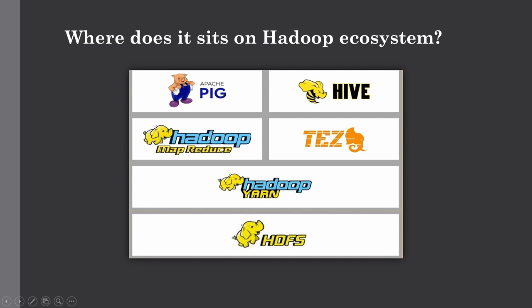Tez is really the replacement for Hadoop MapReduce, which was much slower than processing engines like Apache Spark. If you have a legacy Hadoop cluster in your organization that uses Hive or Pig extensively, and you're not ready to migrate workloads to Apache Spark, Tez is a way more efficient option. You get the benefit of DAGs and much faster execution on your big data workloads.